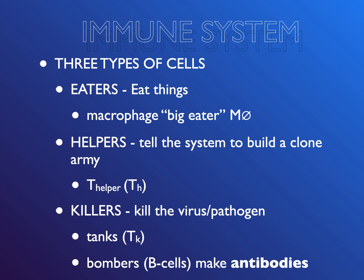Helpers tell the system to build a clone army, and those are a subset called T-helpers or TH cells. And then you have killers — killers that kill the virus or pathogens. There's a type that are like tanks, TK, they're actually T-killer cells. And then bombers, which we're putting into the killer category — we're going to call them B-cells, and they make things called antibodies.